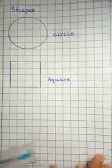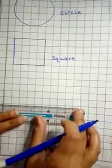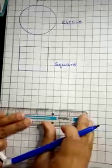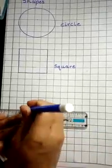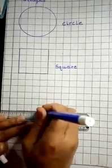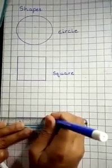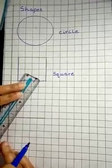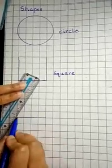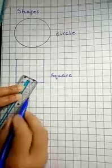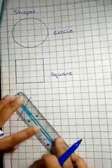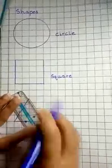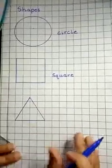Let's move to another shape. You can take four blocks and draw a straight line: one, two, three, four. Now you can draw a line over here — a straight line. And then draw another line on the other side. And join them.